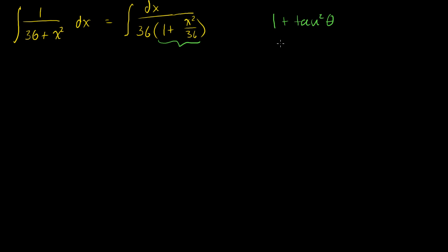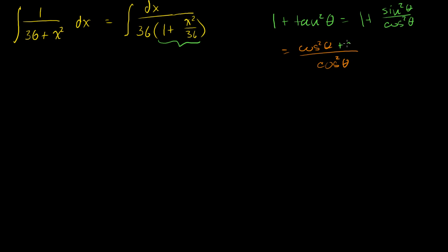Let's prove this one. Tangent squared of theta: 1 plus tangent squared of theta equals 1 plus sine squared of theta over cosine squared of theta. Now 1 is just cosine squared over cosine squared, so we get cosine squared plus sine squared over cosine squared, which equals 1 over cosine squared of theta. Since 1 over cosine is secant, this equals secant squared of theta.